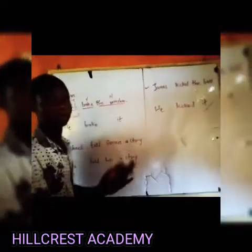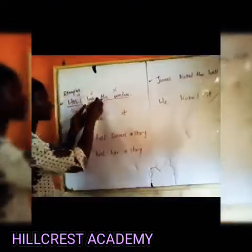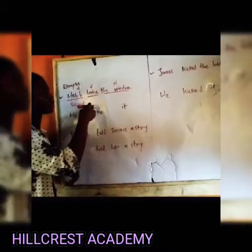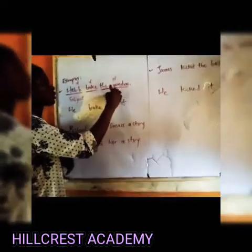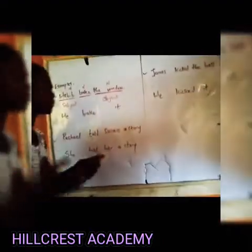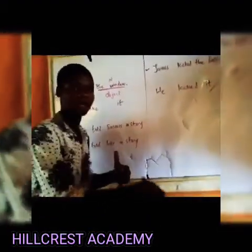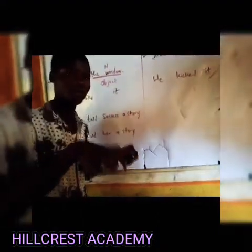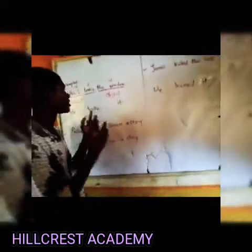The subject is the doer of the action, while the verb is the action itself. So Abib is the subject of the verb, broke is the action itself, and the window is the receiver of the action — also called the object. I told you that the object is the recipient or receiver of an action. So: Abib is the subject — the doer; broke is the verb — the action that was performed; the window is the object — the receiver of the action.